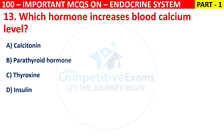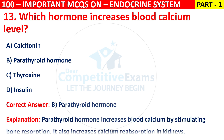The right answer is B, that is parathyroid hormone. Parathyroid hormone increases blood calcium by stimulating bone resorption. It also increases calcium reabsorption in the kidneys.